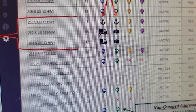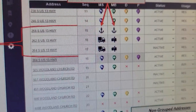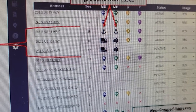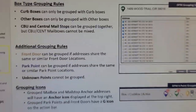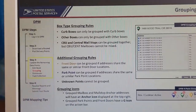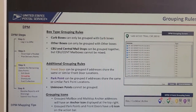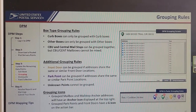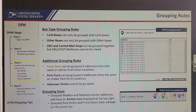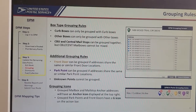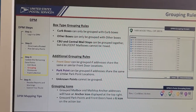Here are some rules you have to follow when grouping: Curb boxes can only be grouped with curb boxes. Other boxes can only be grouped with other boxes. CBU and central mail stops can be grouped together, but CBU and central mailboxes cannot be mixed.